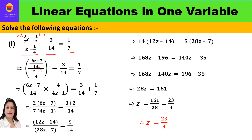Further in the denominator we have z minus 1/4, so we can take 4 as the LCM. z will be multiplied by 4, giving us 4z minus 1, minus 3/14, equal to 1/7. Now we have to solve this fraction divided by fraction.